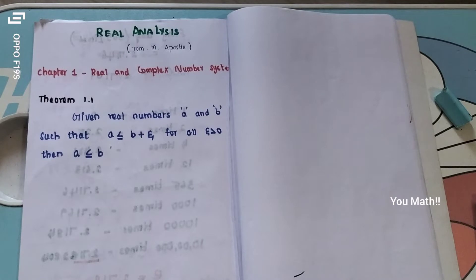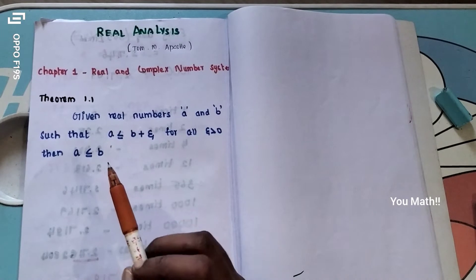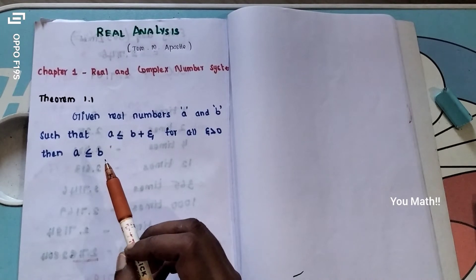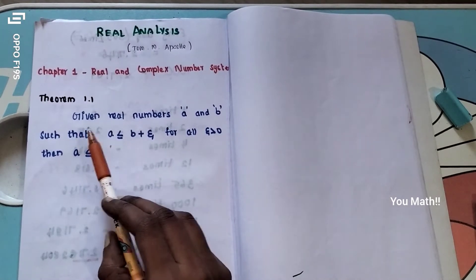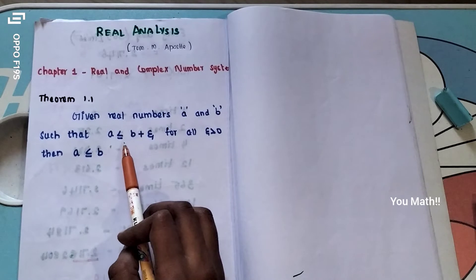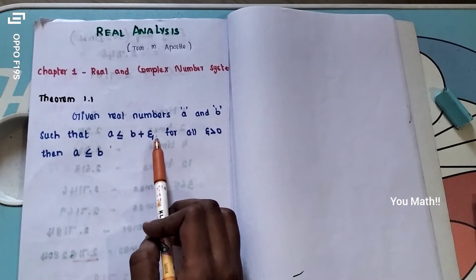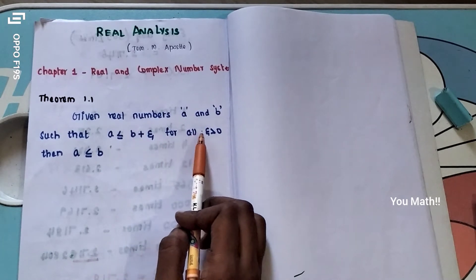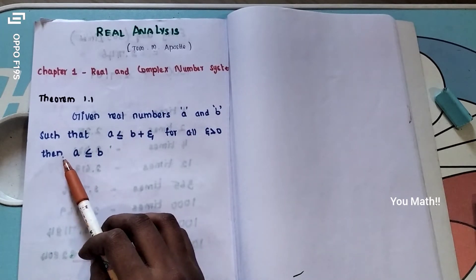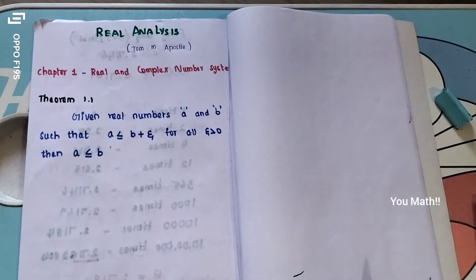I will try to cover it. The theorem statement: given real numbers a and b such that a is less than or equal to b plus epsilon for all epsilon greater than 0, then a is less than or equal to b.